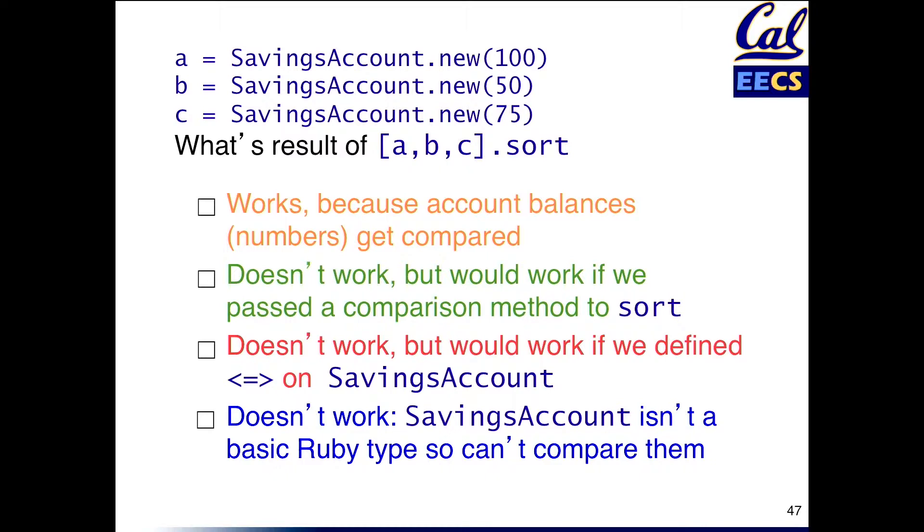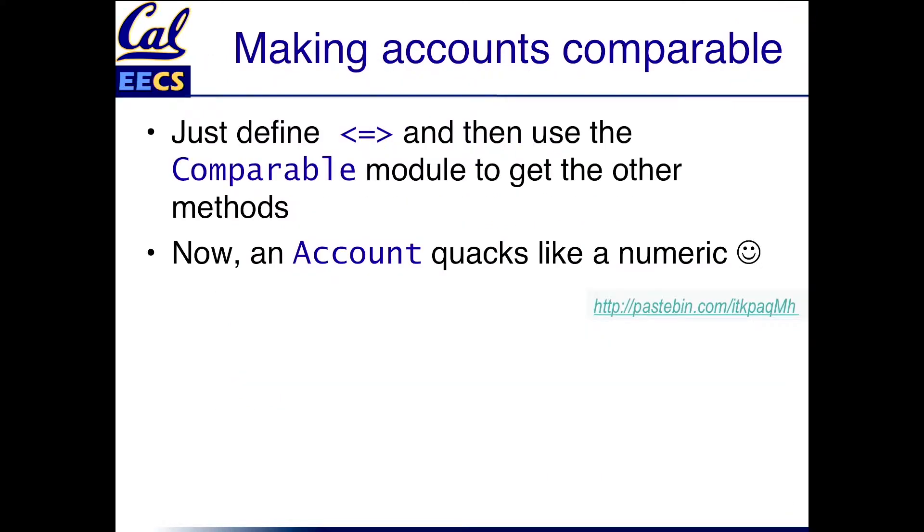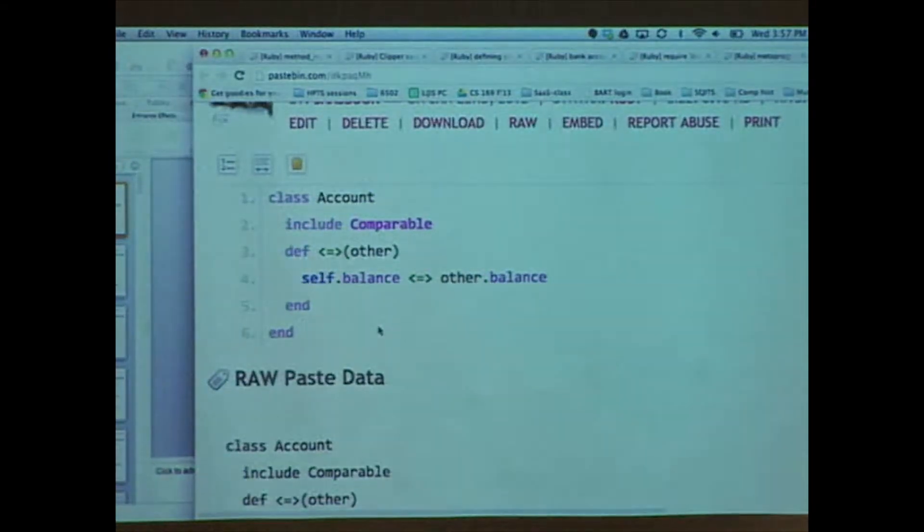So the correct answer is if we define the spaceship operator for savings accounts and by the way how would we define it? Well an easy way would just be to say as in this example, here's a way to define comparison on bank accounts. Here it is. It's coming now. We have like two minutes left. Yes.